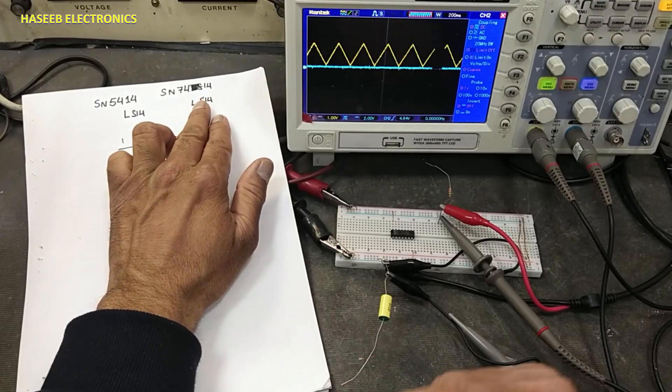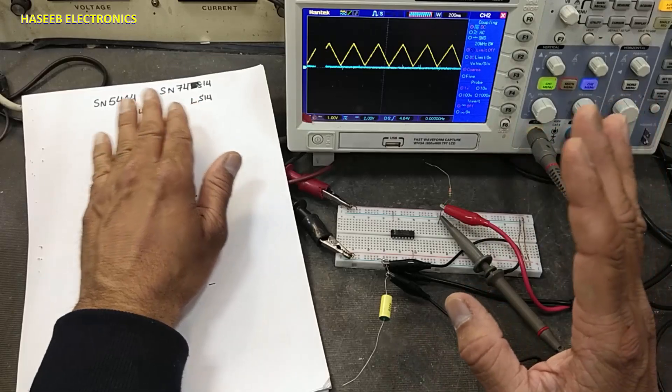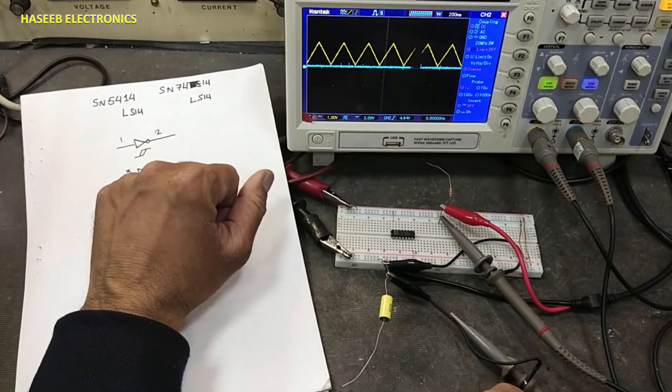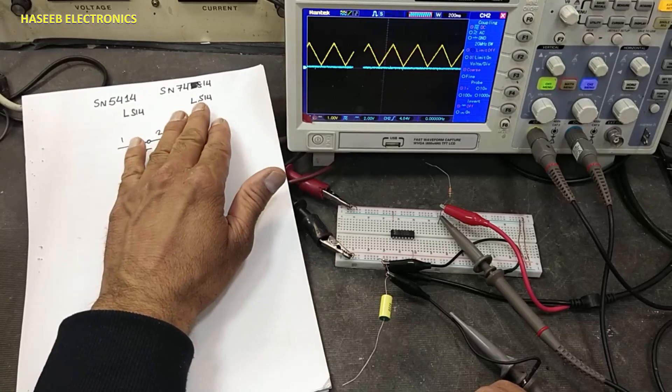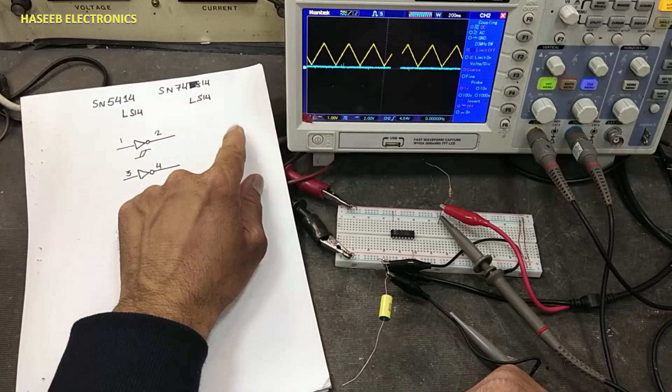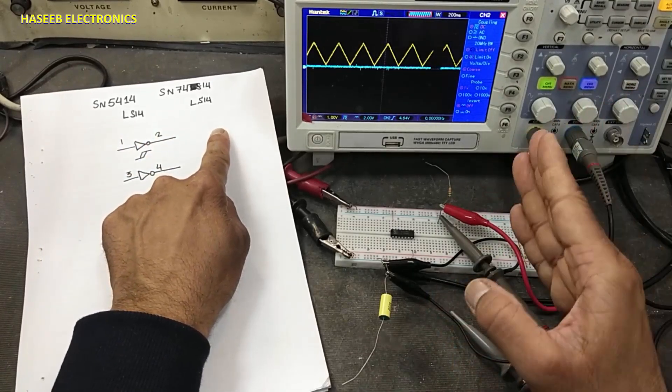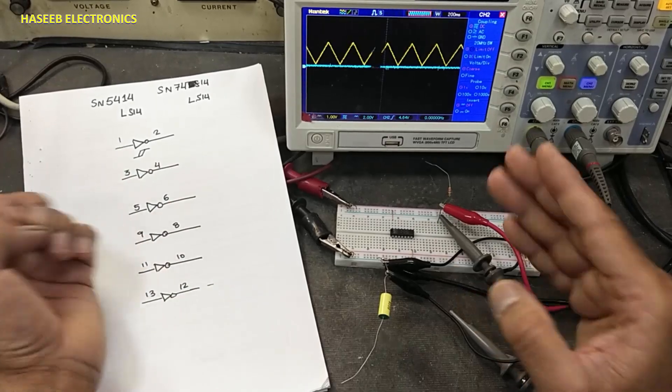The 74 series operates from 0 to 70 degrees free air working temperature. It requires a 5-volt TTL supply, 4.75 to 5.25 volts DC. Pin 14 is positive VCC, pin 7 is ground.